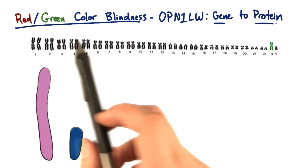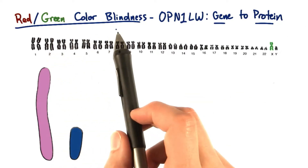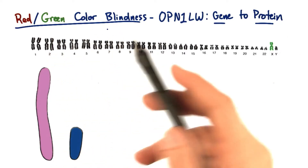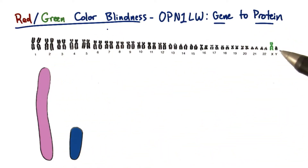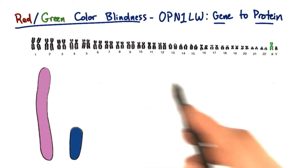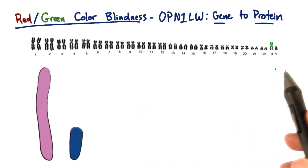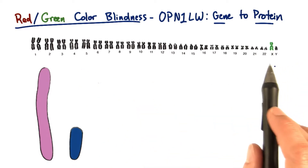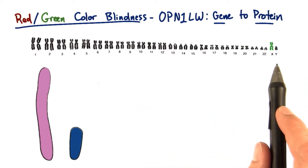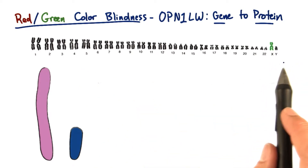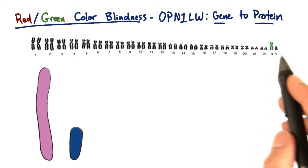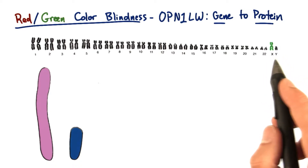Although mutations that can cause color blindness have been found in over 56 genes on 19 different chromosomes, the most commonly inherited form of the disorder comes from mutations on the X chromosome.